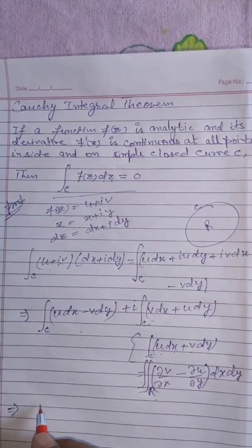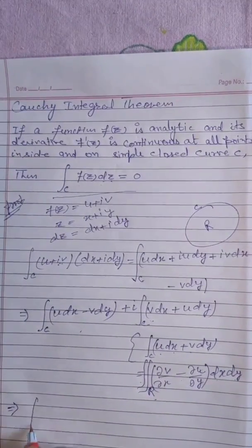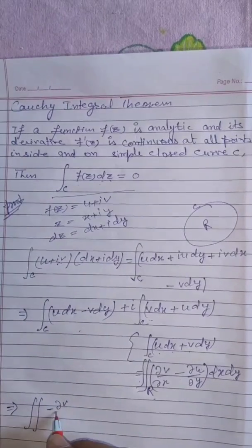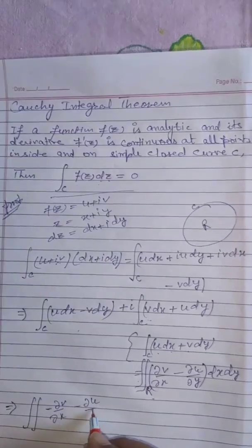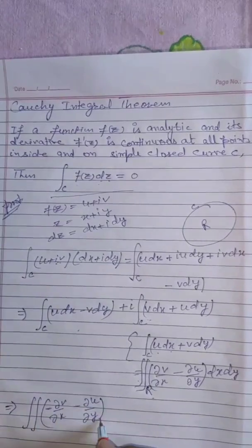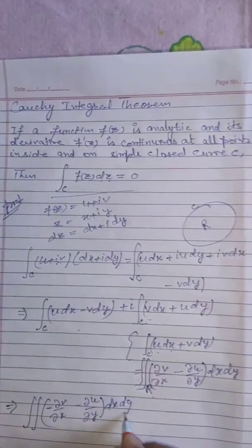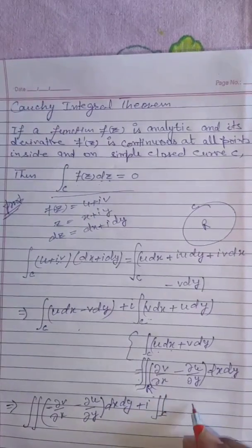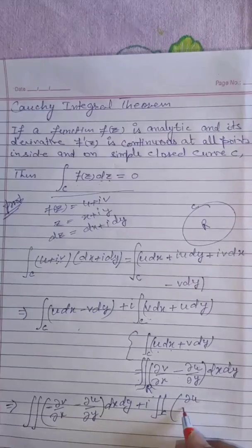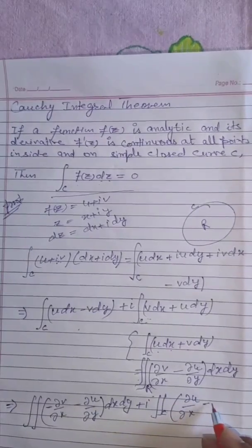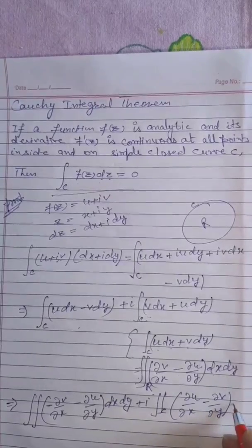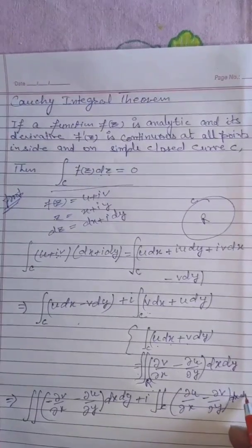Now it equals double integration of minus ∂v/∂x minus ∂u/∂y dx dy plus i times double integration over c of ∂u/∂x minus ∂v/∂y dx dy.